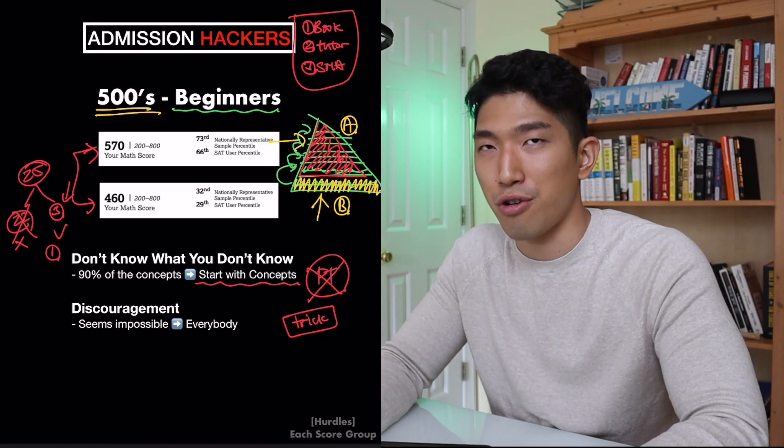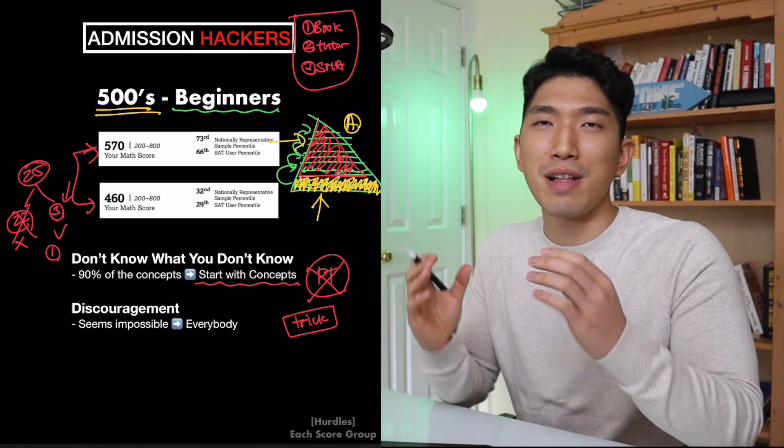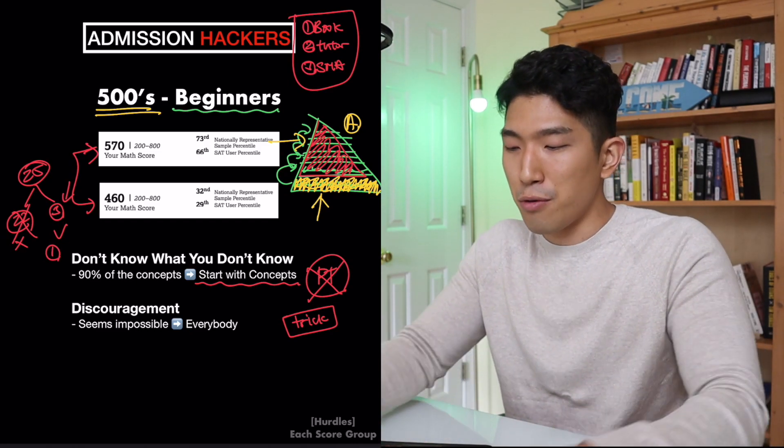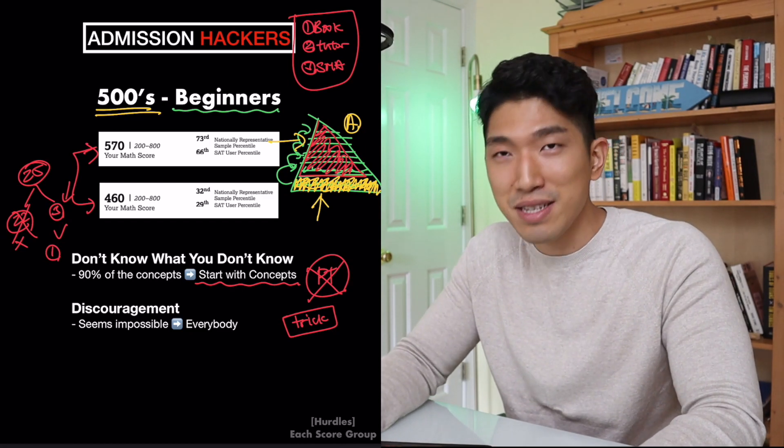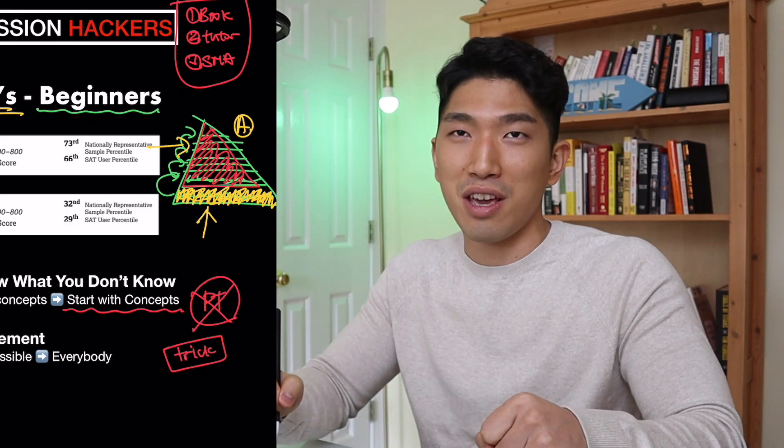And when you try to learn the advanced concepts while you are weak on the basic foundations, you're going to struggle a lot. These concepts are going to come a lot harder than they should be. It's pretty similar to learning how to ride a bicycle. It's a lot easier if you start with the training wheels, and as you get better, you take the wheels off. If you're going straight into advanced concepts without the basics, it's like going straight into the bicycle without training wheels, and it's your first day on the bike.